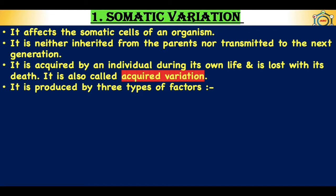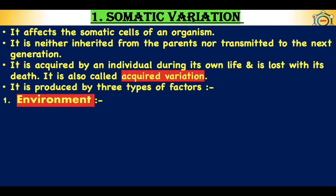Somatic variation is produced by three types of factors, the first of which is environment. Environment includes all factors that affect the organism like habitat, light, temperature, food, air, pressure, humidity, wind, enemies, etc. Environmental factors affect all organisms; however, they affect plants more than animals because plants cannot move and protect themselves from environmental hazards.